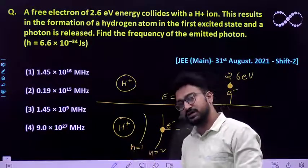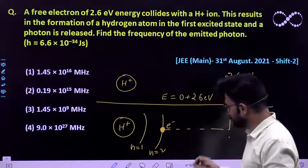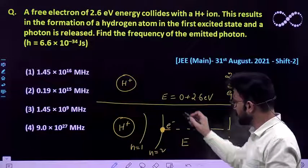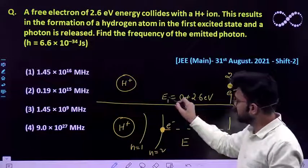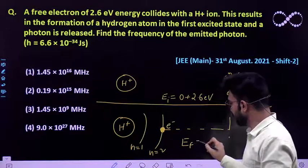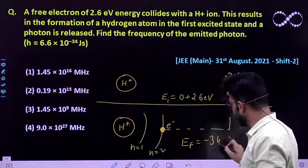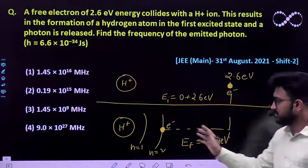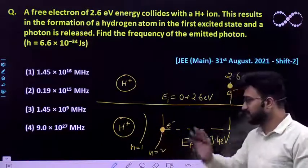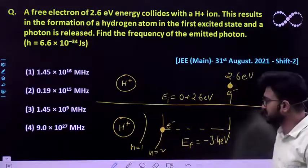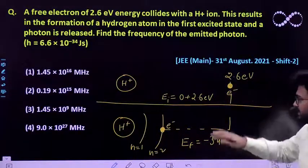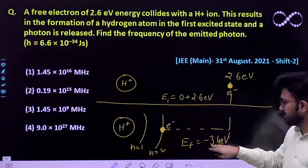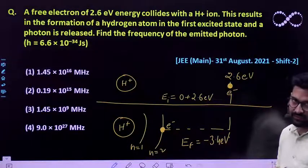At the first excited state, the total energy possessed by the hydrogen atom is given by E final, which is minus 3.4 electron volt. This is the energy possessed by a hydrogen atom at its first excited state. So initially the energy was 2.6 eV and now it is minus 3.4 eV.